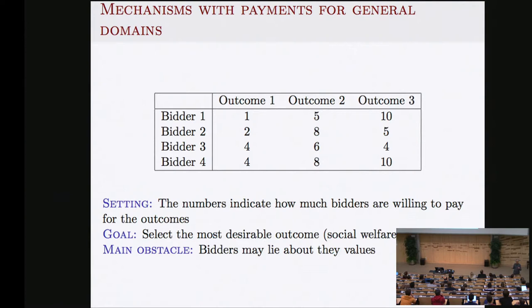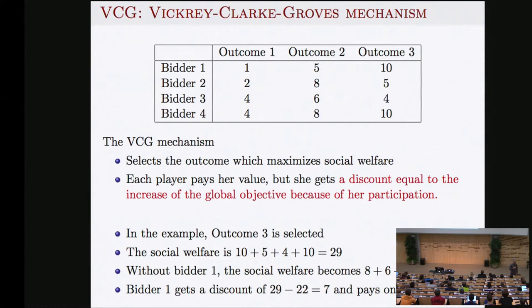For example, bidder two may have a reason to declare 26 for outcome two instead of their true value, shifting the maximum to outcome two. Is there a way to solve this? Yes — with money, if the bidders pay. This is the famous VCG mechanism: Vickrey–Clarke–Groves. Vickrey had the second-price idea; VCG is a generalization. We find the column with maximum sum, ask bidders to declare values, and then charge payments to enforce truthfulness.